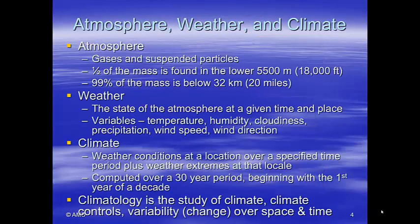The atmosphere consists of gases and suspended particles. Half of the mass of the atmosphere is found in the lower 5,500 meters. Anybody who's run a 5-kilometer race knows that 5,000 meters is pretty close to 3 miles. So half the mass of the atmosphere lies about 3 miles from the surface of the Earth. 99% of it is in the lowest 32 kilometers or 20 miles of the Earth.